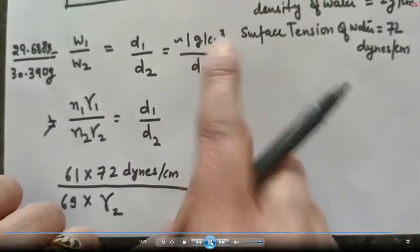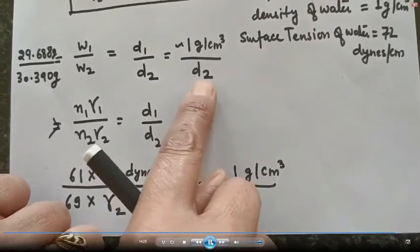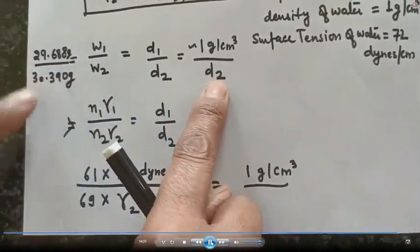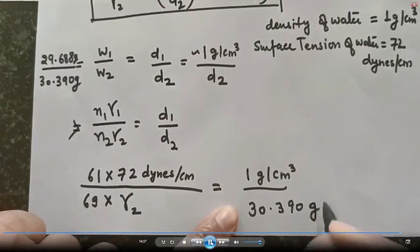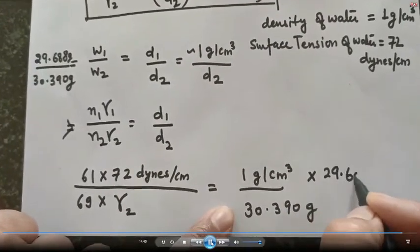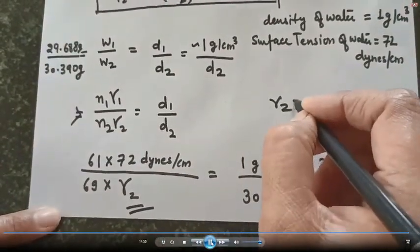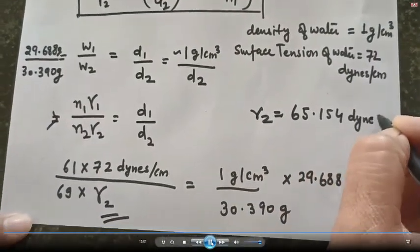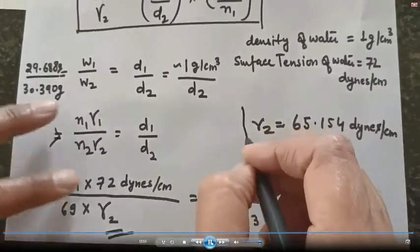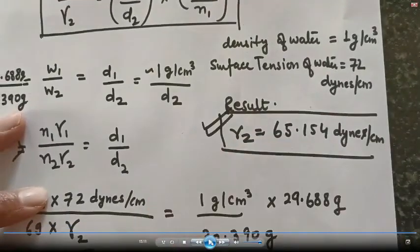If you write d₁ = 1 g/cm³, from there you can evaluate d₂, or simply write W₁/W₂ in the formula. After solving, we get γ₂ = 65.154 mN/m. This is the surface tension for liquid two — the 10% glycerine solution. I hope you understand the experiment, how to perform it, and how to calculate the readings.